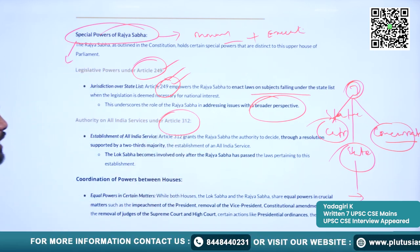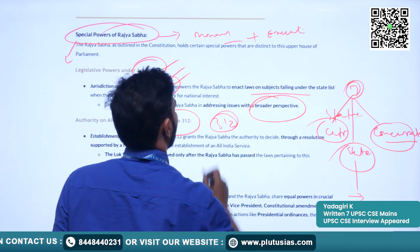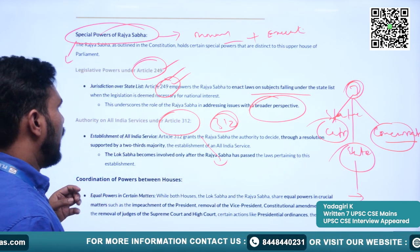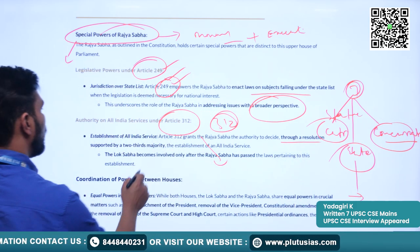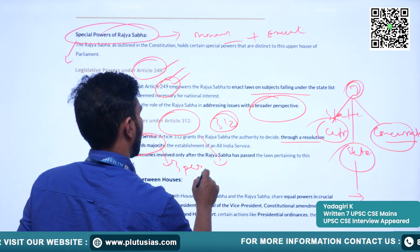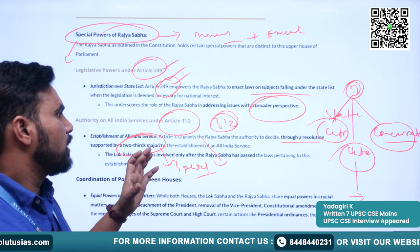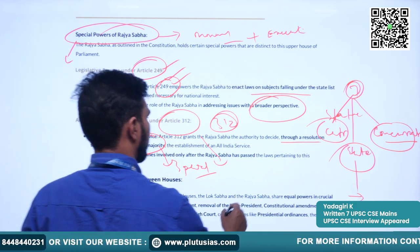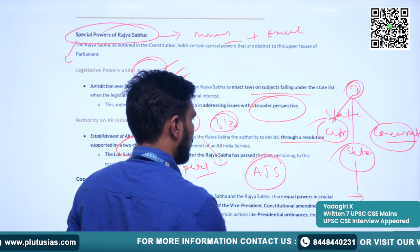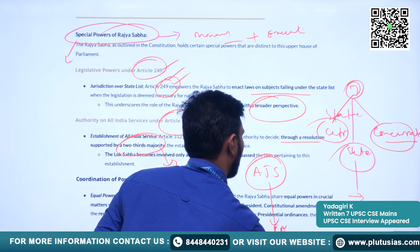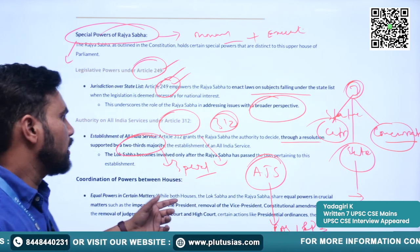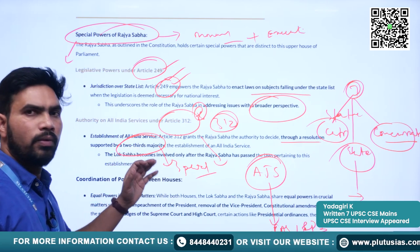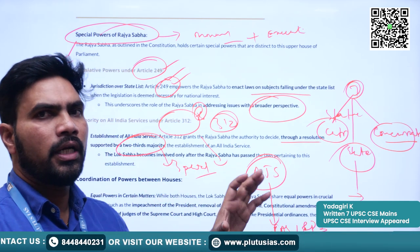Next is the authority over All India Services under Article 312. If an All India Service has to be established, it has to be approved by Rajya Sabha through a resolution supported by a two-thirds majority — that means special majority. There is a debate about establishing All India Judicial Services, similar to the IAS and IPS. Through Article 312, the Rajya Sabha can pass a resolution for creating a new All India Service.